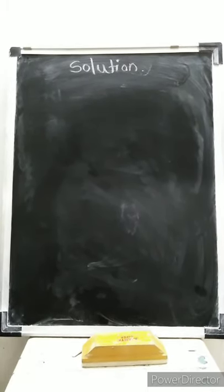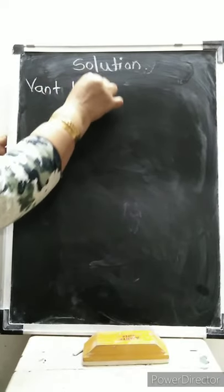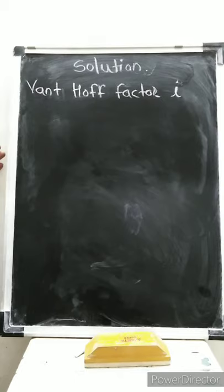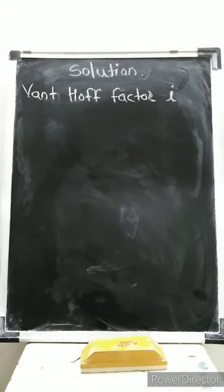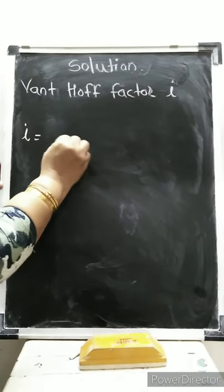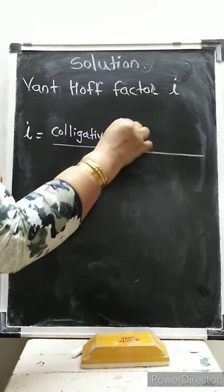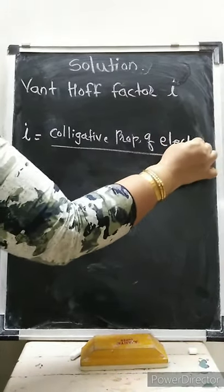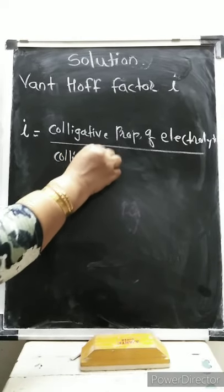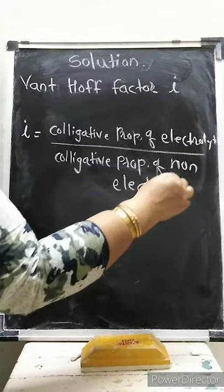The colligative properties of electrolyte are related to those of non-electrolyte by a factor called the Van't Hoff factor. This Van't Hoff factor is indicated by 'i'. By using the Van't Hoff factor we obtain the relation for colligative properties of electrolyte using the properties of non-electrolyte. It is defined as the ratio of colligative properties of electrolyte solution divided by colligative properties of non-electrolyte solution.